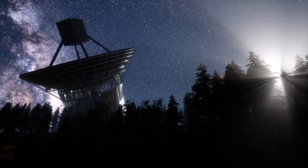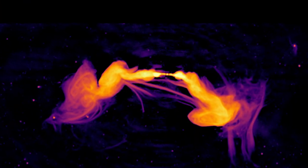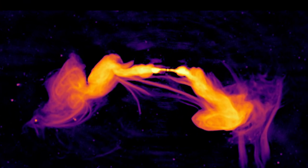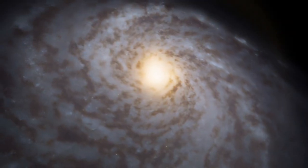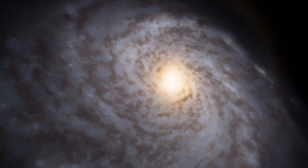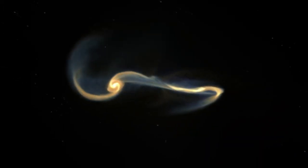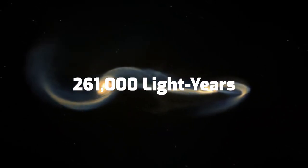Meerkat's keen radio vision, on the other hand, revealed an unexpected feature. Titanic threads of radio emissions emerging from the maelstrom. These nearly parallel strands appear to connect the swirling lobes at the end of the galaxy's two plasma jets. Each thread is massive, with the longest stretching for 261,000 light-years.